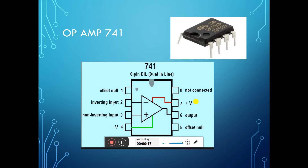It is a dual inline package. Pin number 2 is inverting, pin number 3 is non-inverting terminal. Pin number 4 and pin number 7 are both supply pins. Pin number 7 requires plus 15V, pin number 4 requires minus 15V. Pin numbers 1, 5, and 8 — these 3 pins are no connection.